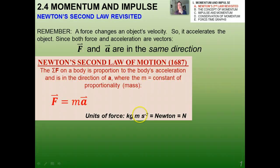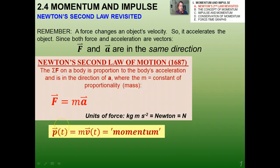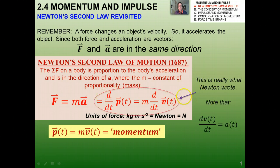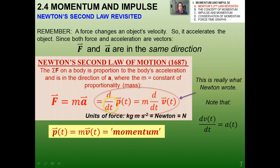The second law of motion is 1687. The net force on a body is proportional to the body's acceleration and is in the direction of the acceleration, where M is actually the constant of proportionality. We said that the units of force were the Newtons, kilogram meters per second squared. And I introduced this concept of momentum to you already, and I said this thing called P of T is actually MV of T. Remember that all of these things are vectors. Now, the time rate of change of velocity is acceleration. So we can say that F equals the time rate of the change in momentum.